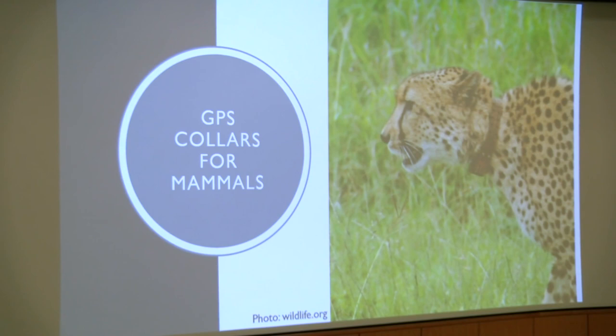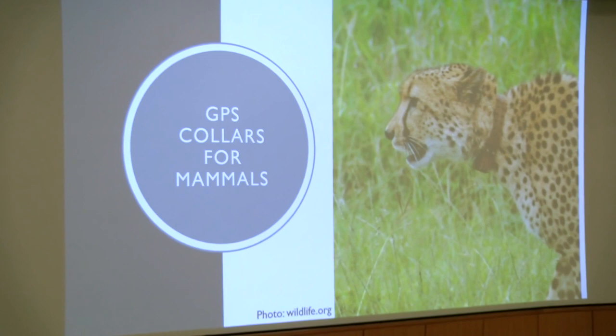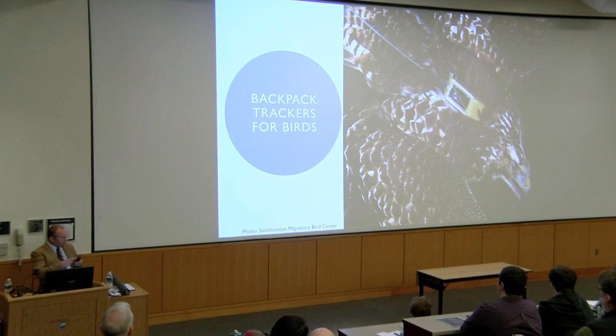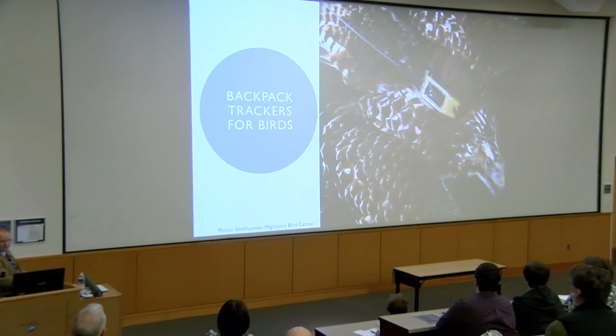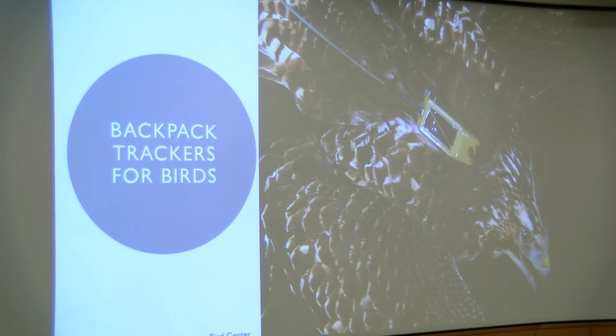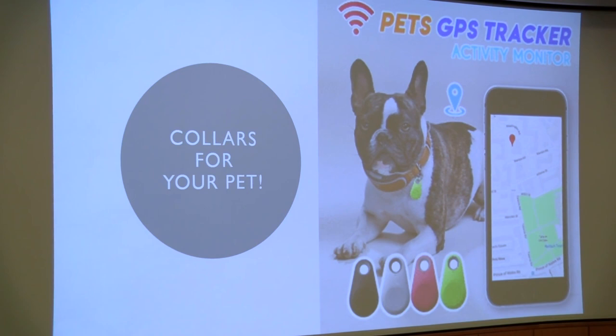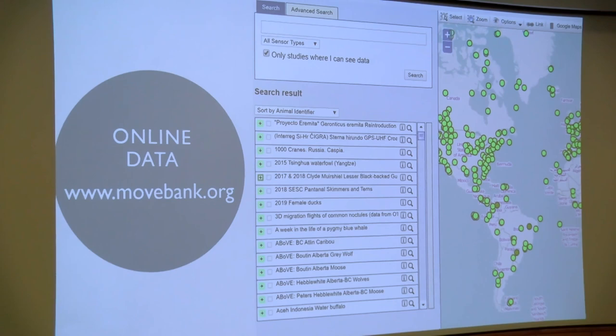For a couple of decades, remote tracking of animals has been one of the major ways we collect data to understand animal behavior. For large mammals, we can put collars on them — we'll see some collared elk data later on. Smaller animals like birds can also be tracked; there are backpacks that fit on even small songbirds, and this one has a solar cell. With these advances in technology, battery life is no longer as big of an issue, and we can get amazingly high-resolution data for a long period of time.